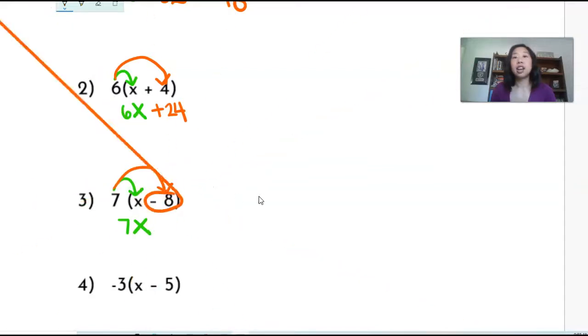And I have to explain to my students that the sign is attached to that second number. So seven times negative eight is negative 56.